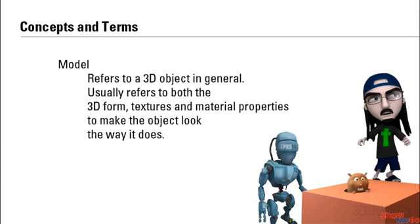So if you have a character model, it's going to be referring to not only the mesh — which is just the raw 3D information — but also the coloring and the textures. And sometimes that could also include the rig, which is the armature inside that allows you to take a character and pose them and put them in different positions.